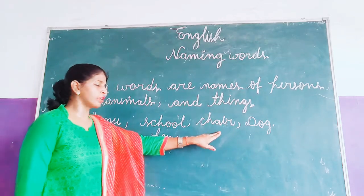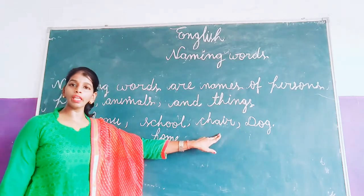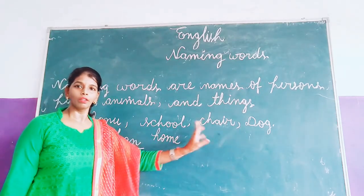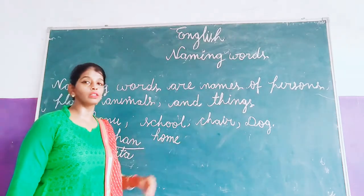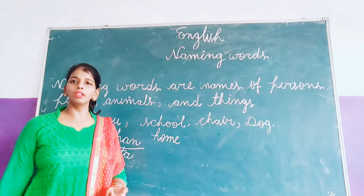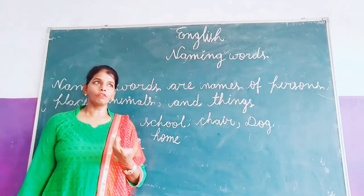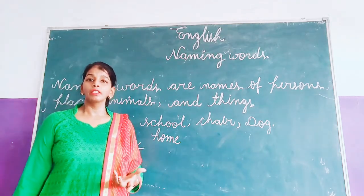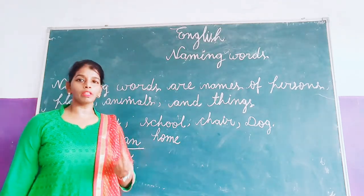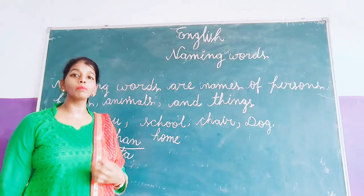Next, the name is chair. Chair is a thing. What do we call chair? Table, bag — for example, these are all things and we call them naming words.